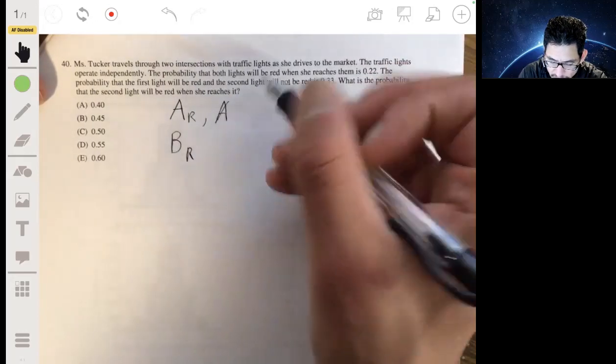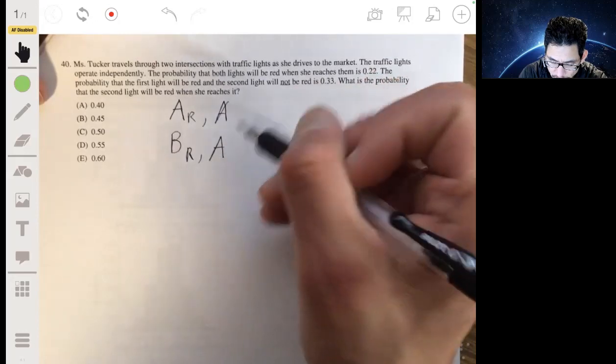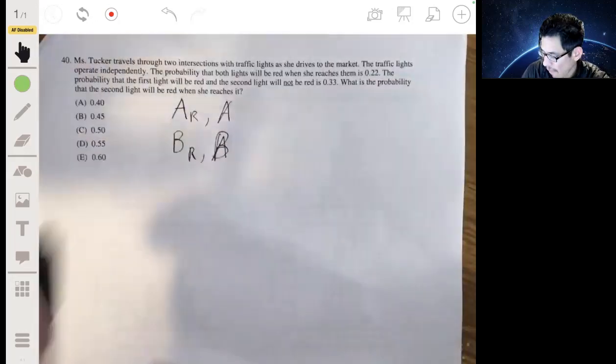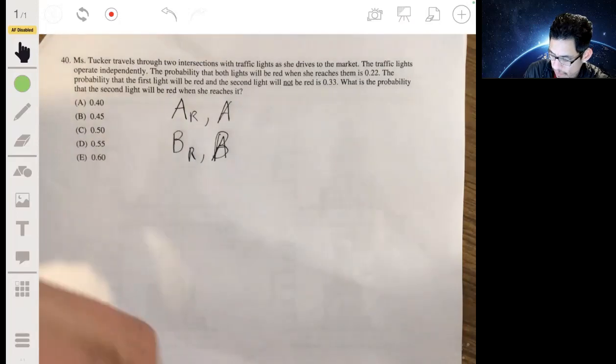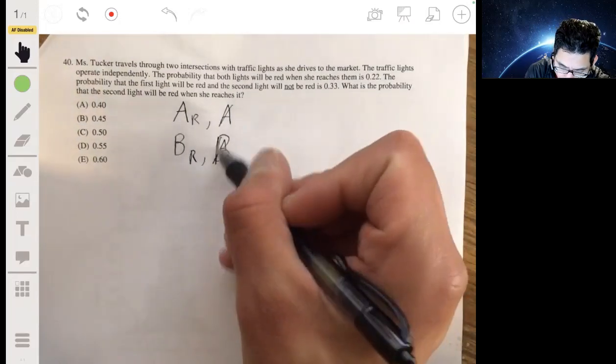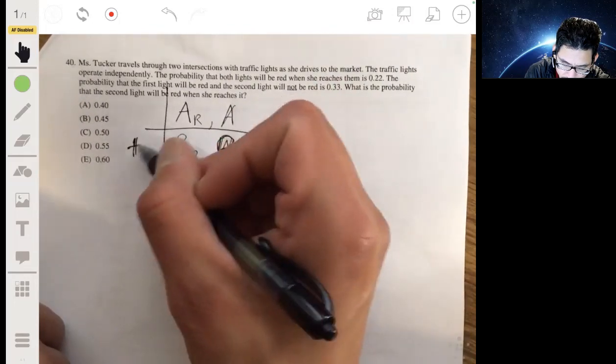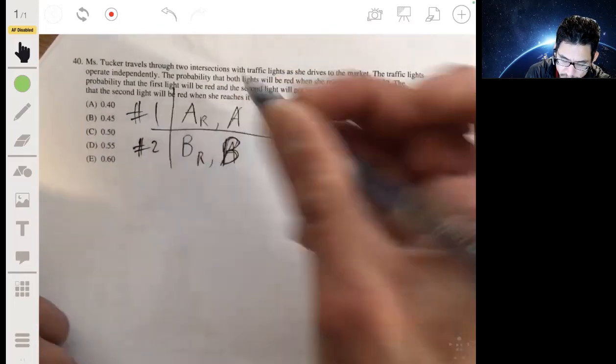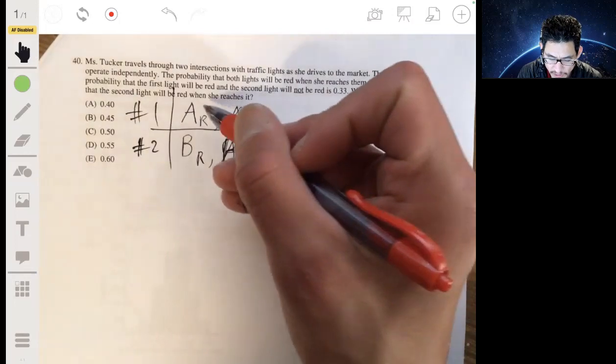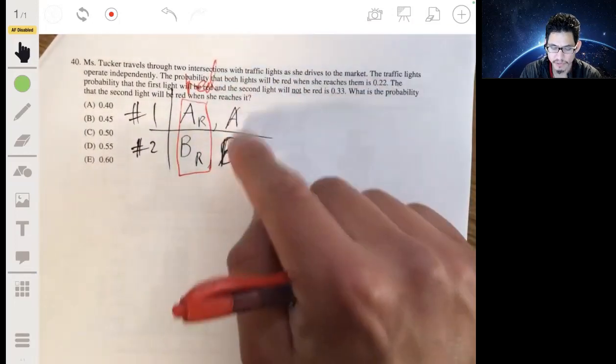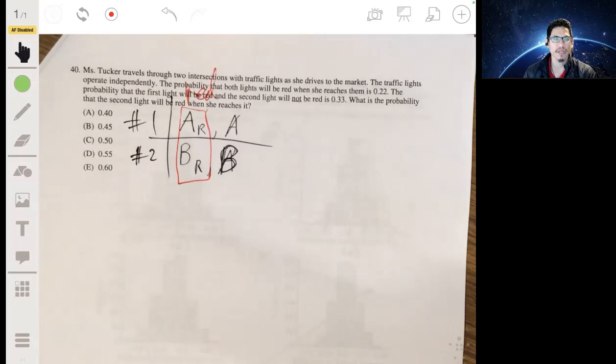And A, our B is just when it's not red. So let me do light number two, light number one, we'll say. And these are when it's red, and these are when it's not red.